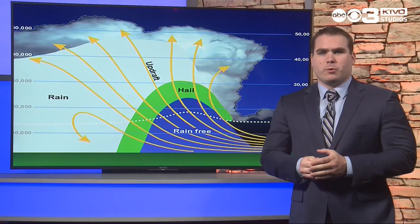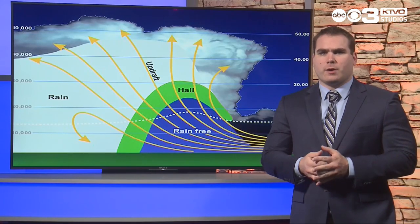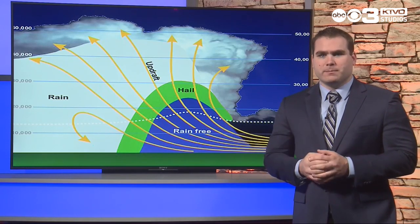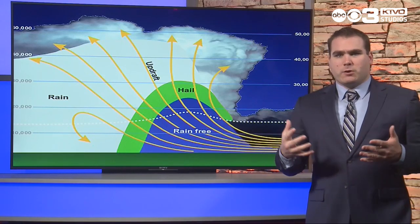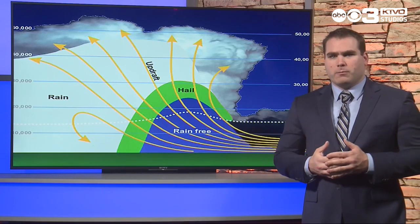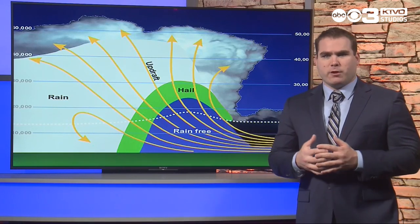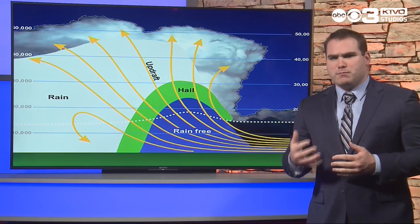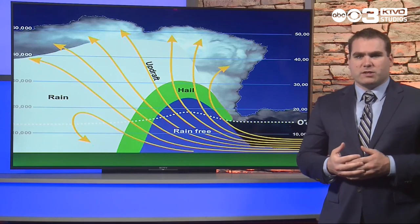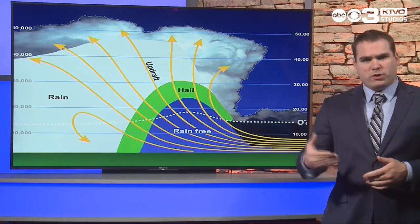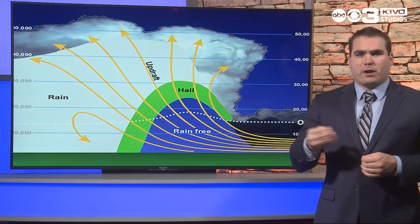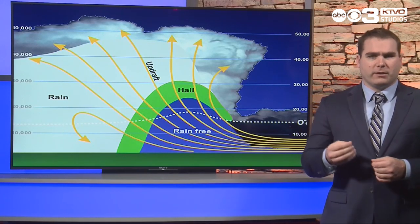Hailstones grow through collisions with supercooled water droplets, forming a nucleus for other water droplets to freeze on. This happens in two modes. The first mode is what's known as wet growth, where the air temperatures are just below freezing around the nucleus, resulting in water droplets that don't immediately freeze. The droplets slowly spread out around the nucleus, then release trapped air bubbles, creating a layer of very clear ice.